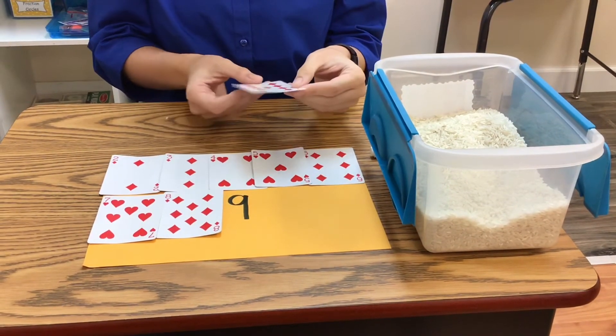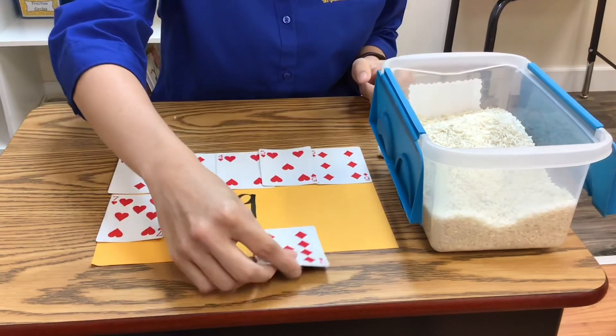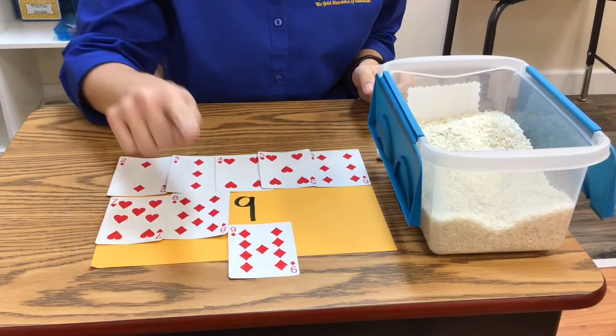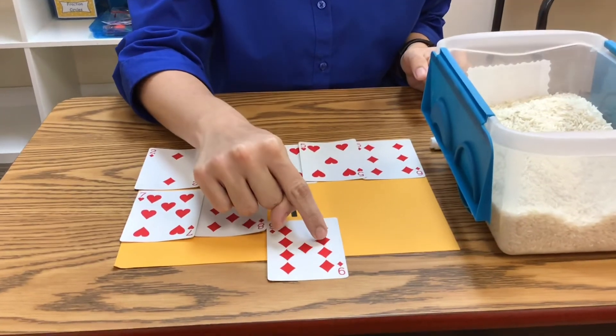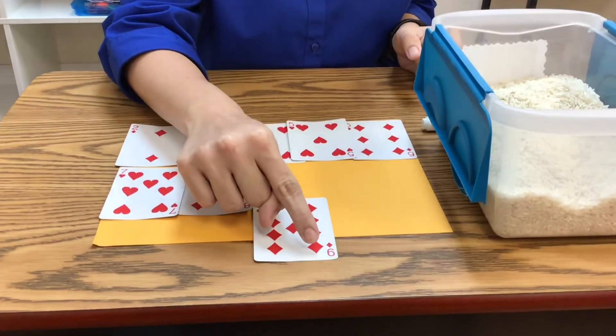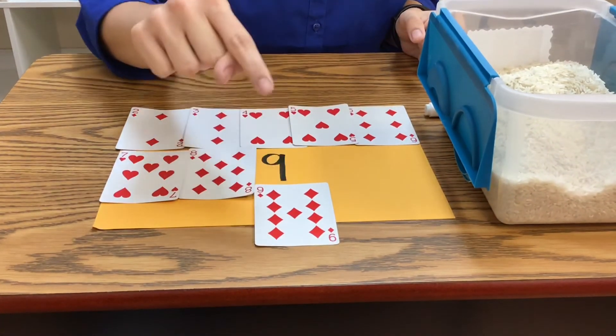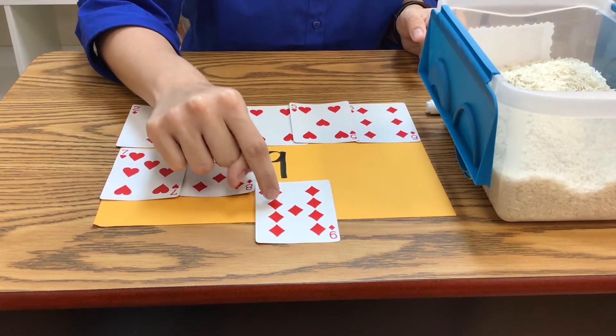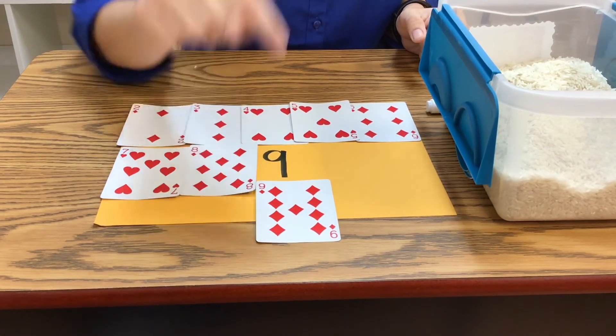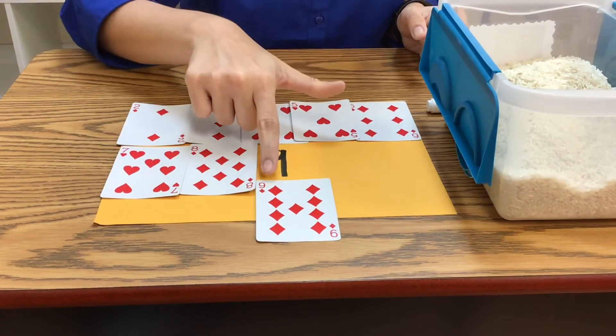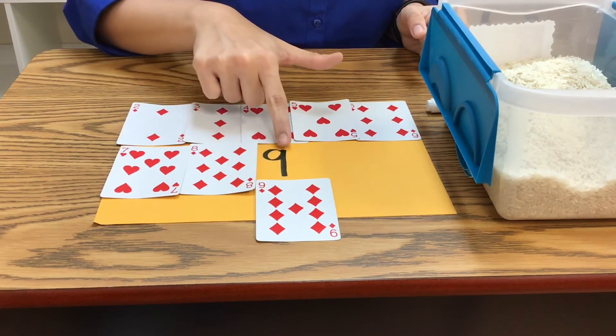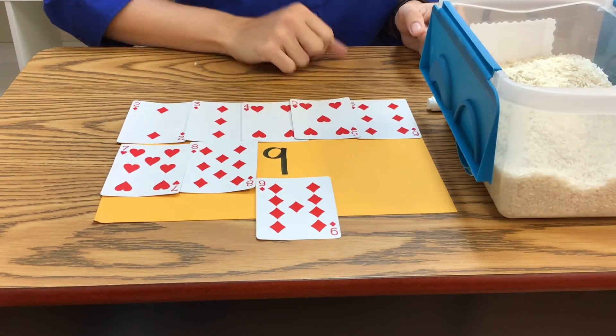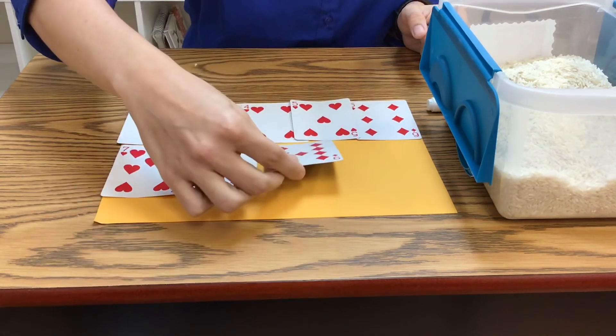Our last number. Let's see if they match. Let's count our diamonds. One, two, three, four, five, six, seven, eight, nine. So, our number nine in our corner and our nine on our paper match. We did an excellent job.